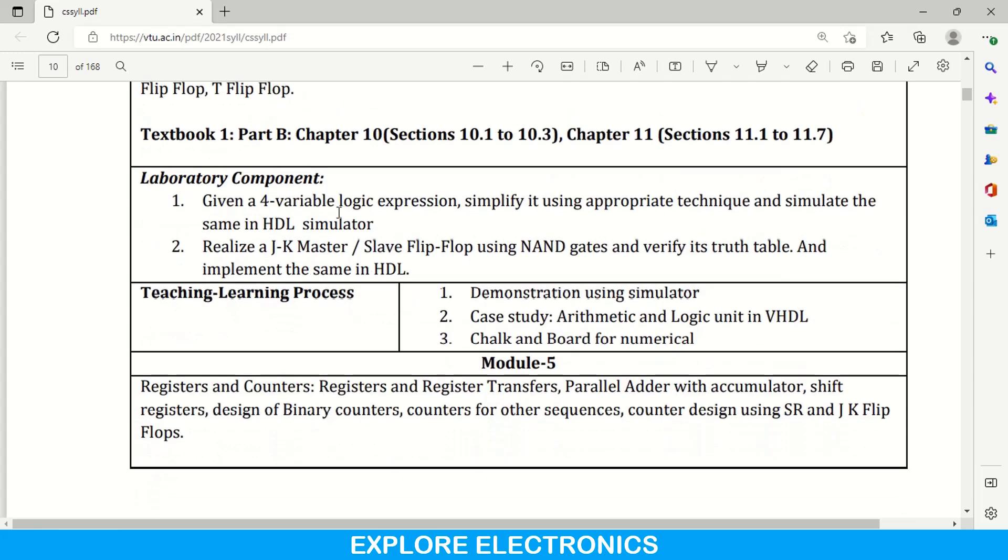And laboratory component for this is again a 4 variable logical expression is given and simplify it using technique. We need to simulate that using HDL simulator. Here, we need to use any HDL simulator like Xilinx, Vivado or Cadence, any software and we need to simulate it and check the output for this logical expression. And realize JK master-slave flip-flop using NAND gates, verify its truth table and implement it using HDL. We need to write the code using VHDL. This is laboratory component for the fourth module.